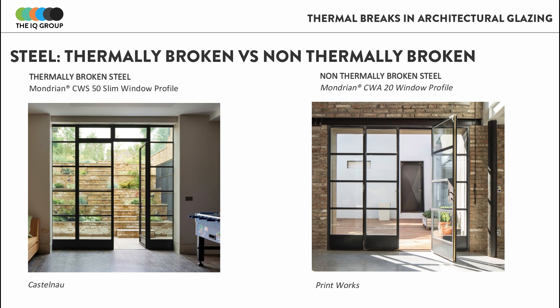This is a visual comparison of the two systems. On the left is the thermally broken steel solution using Mondrian profiles in a Belgium door configuration, and on the right is a very similar door configuration using a non-thermally broken solution. You can see that the visual design is almost identical.